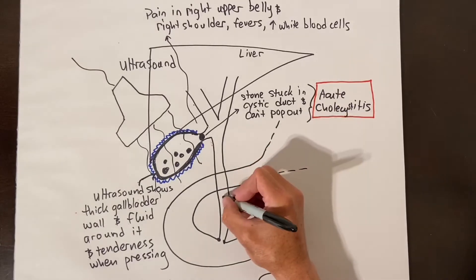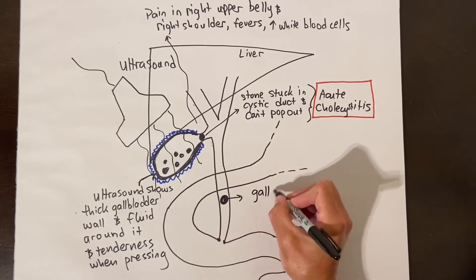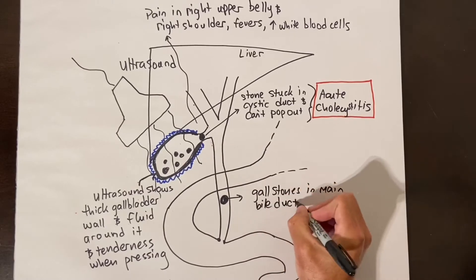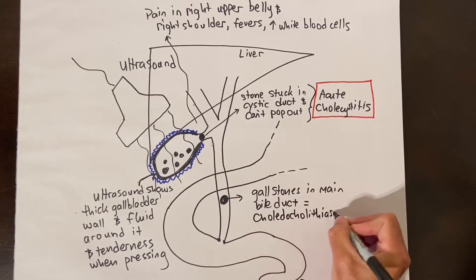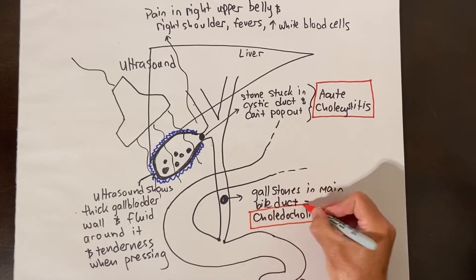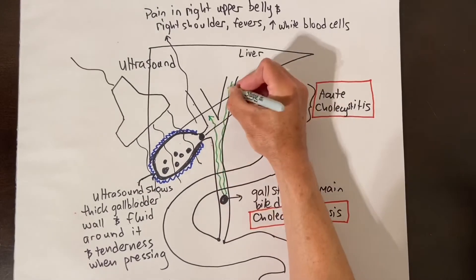The other problem with gallstones are when they get out of the gallbladder and get into the bile drainage tube. If the gallstone is in the main bile drainage tube coming from the liver, this is called choledocolithiasis. Choledocolithiasis can be dangerous.